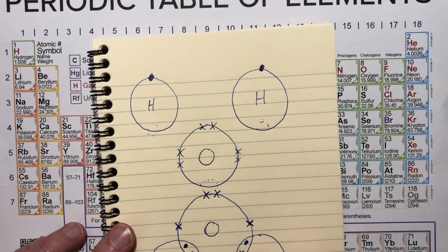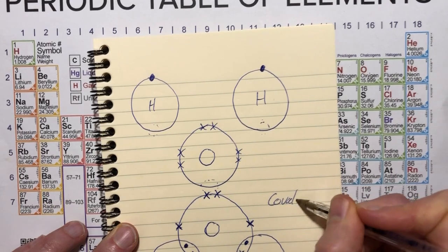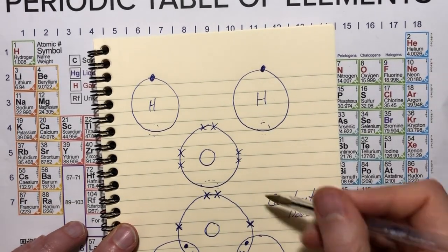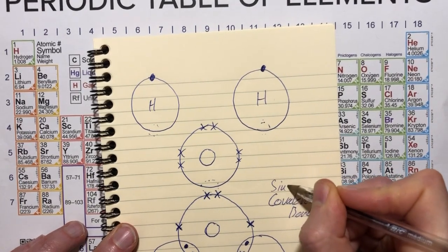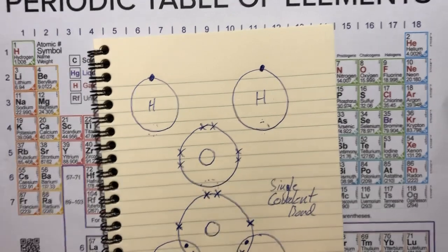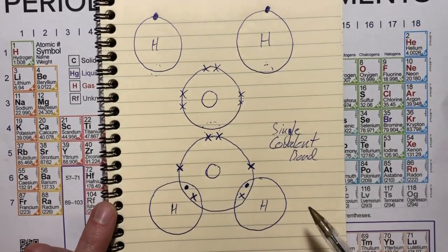And whenever you see one of these overlaps, remember that that is a covalent bond. And it might even be called a single covalent bond, which always involves two electrons. In the next video, I'm going to show you what a double covalent bond is.